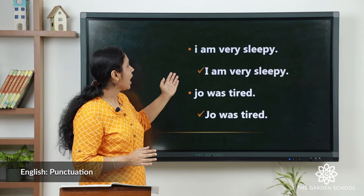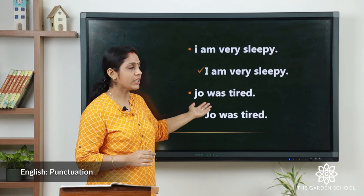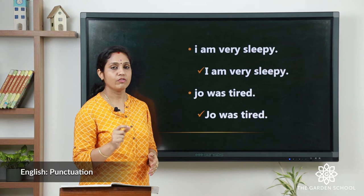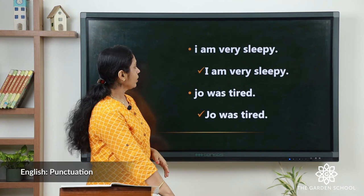'I am very sleepy' with a full stop — it becomes a sentence. Another example: 'Joe was tired.' The first word is 'Joe' and the first letter is 'J,' so we have to write 'J' in a capital letter: 'Joe was tired,' and put a full stop there. Then it becomes a sentence.